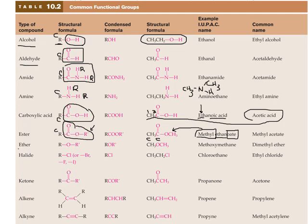An ether has a carbon-containing group on both sides of an oxygen in the middle. The systematic name combines both sides — for example, 'methoxy' (OCH3) with methane as the parent. A halide is a carbon-containing group attached to chlorine, fluorine, bromine, or iodine — these are called alkyl halides.